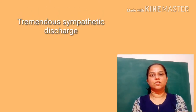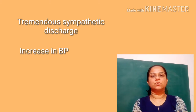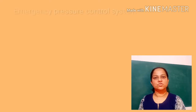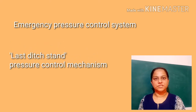The vasomotor center will cause a tremendous, powerful sympathetic discharge throughout the body and elevate the blood pressure back to normal, which will relieve CNS ischemia. It acts as an emergency pressure control mechanism which prevents further fall in blood pressure. That is why it is also coded as the last ditch stand pressure control mechanism.